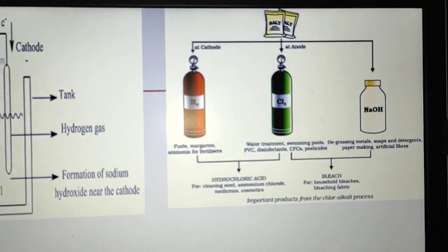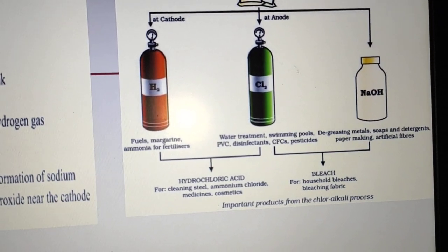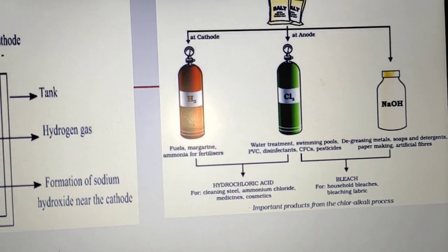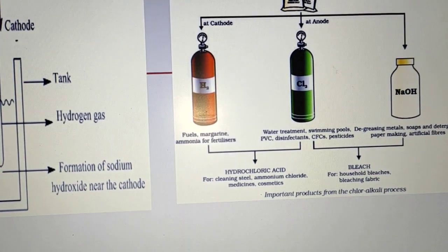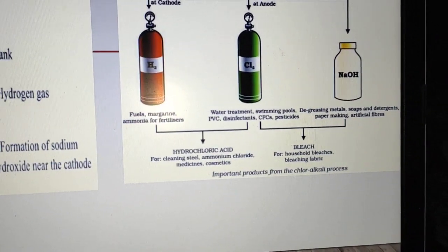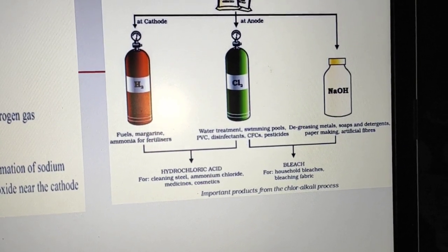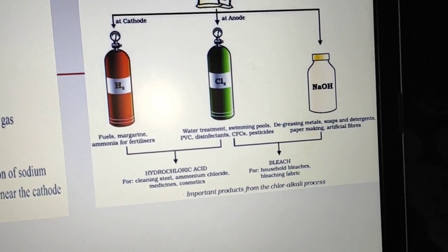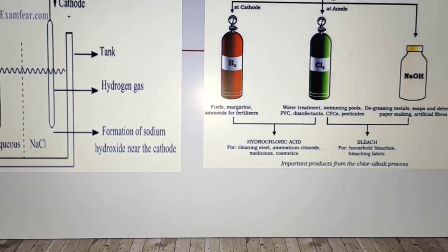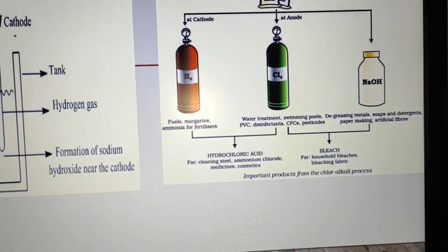Sodium hydroxide solution is formed near the cathode. From the NCERT diagram, there is one beaker and two cylinders: H₂ gas (shown in red) is collected at the cathode, and Cl₂ gas is collected at the anode. Uses of H₂ gas include fuel and ammonia for fertilizers. Uses of Cl₂ include water treatment, swimming pools, PVC, disinfectants, CFCs, and pesticides. NaOH is used for degreasing metals, soap and detergent making, and paper making.